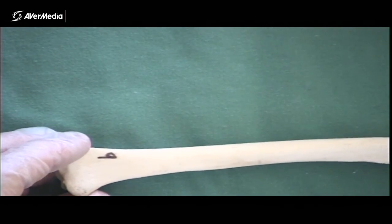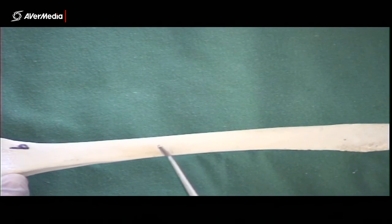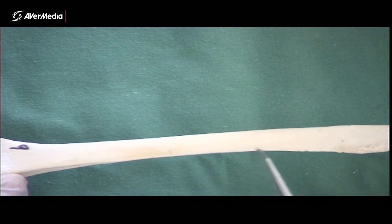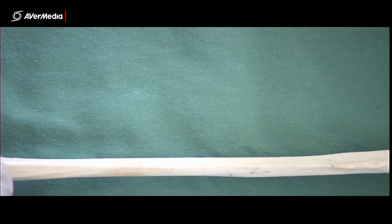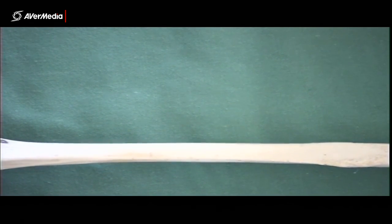And then, as with the ulna, we have an interosseous border, which is, again, the sharpest border on the bone. And that one, naturally, will be pointing medially. And that's going to be where the interosseous membrane, again, attaches.